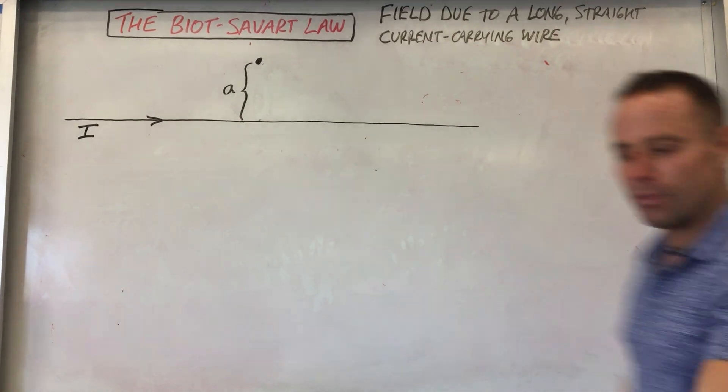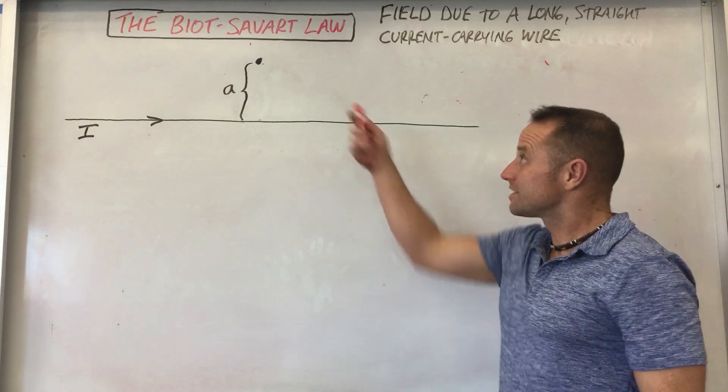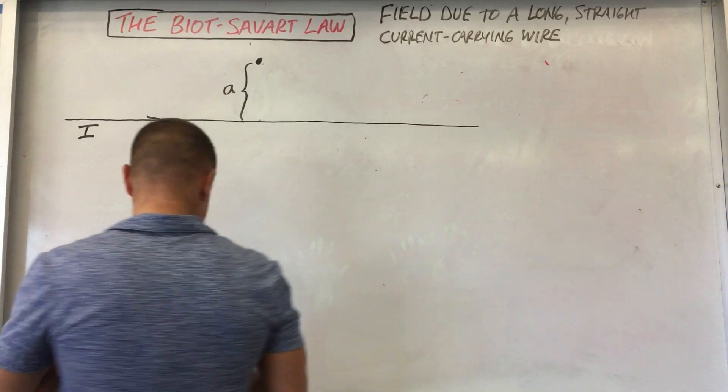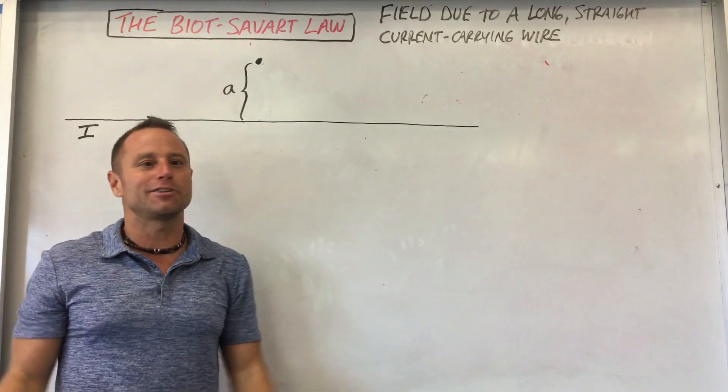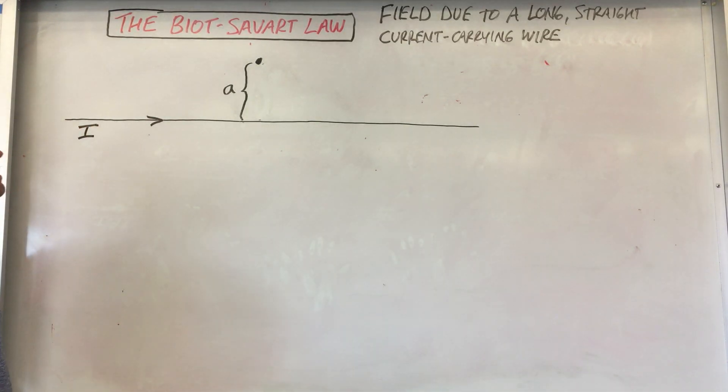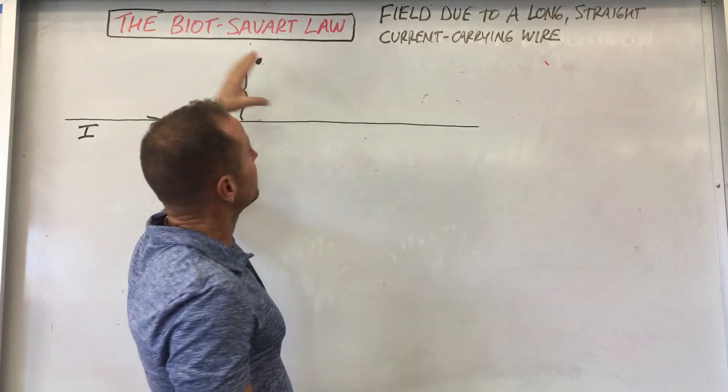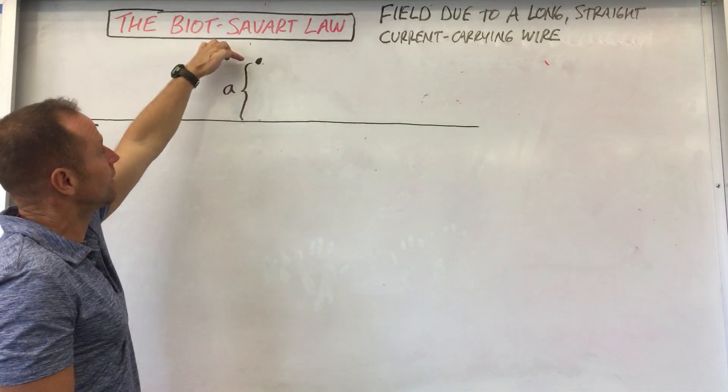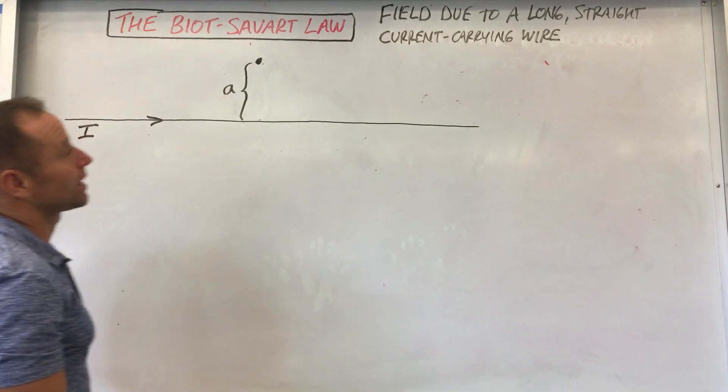All right, so we're gonna look at a specific example in which we use the Biot-Savart law. Kind of a tough one, and I know this is intimidating at first, so my goal here is to show you some strategies to make it a little bit easier to use. What we've got here is a current carrying wire and we're supposed to find the magnetic field made by this wire at a distance a above the wire. So we're just calculating the field caused by a long straight wire.